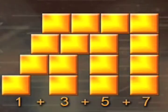You can see, for instance, that the sum of the first four odd numbers, 1, 3, 5 and 7, gives 4 squared.